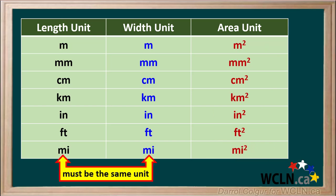Whenever we're calculating area, the unit for length and width must always be the same. If they're not the same to begin with, we must convert one of them until they are the same.